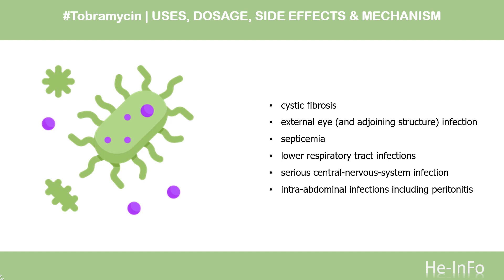Additionally, Tobramycin injection is indicated for skin, bone, and skin structure infections caused by P. aeruginosa, Proteus spp., E. coli, Klebsiella spp., Enterobacter spp., Serratia spp., and S. aureus, as well as complicated and recurrent urinary tract infections caused by P. aeruginosa, Proteus spp., E. coli, Klebsiella spp., Enterobacter spp., Serratia spp., Providencia spp., and Citrobacter spp.